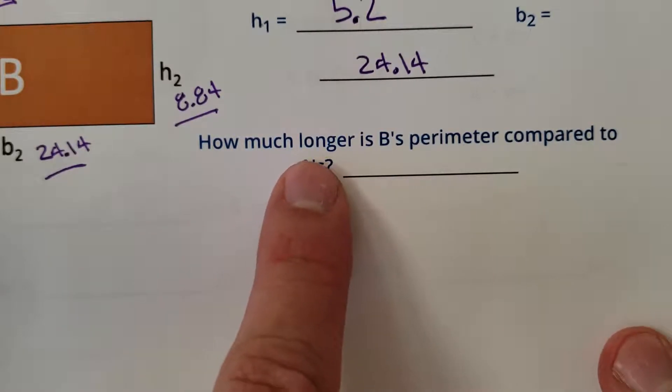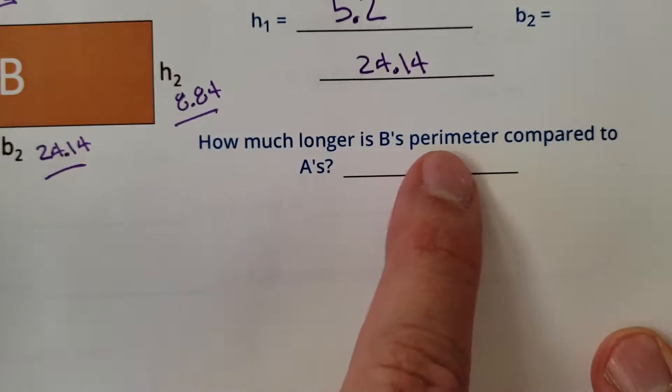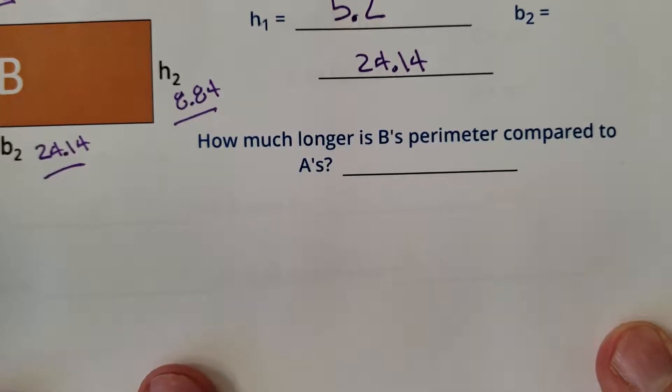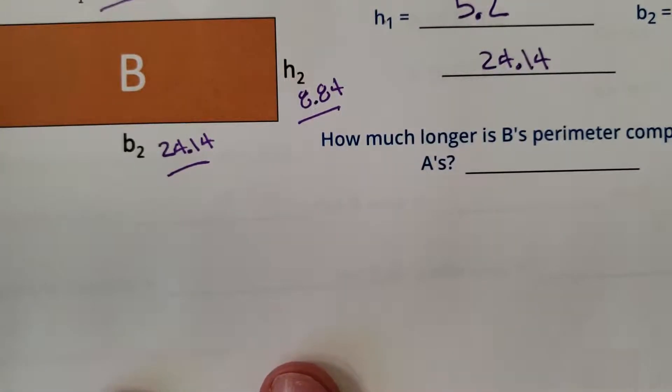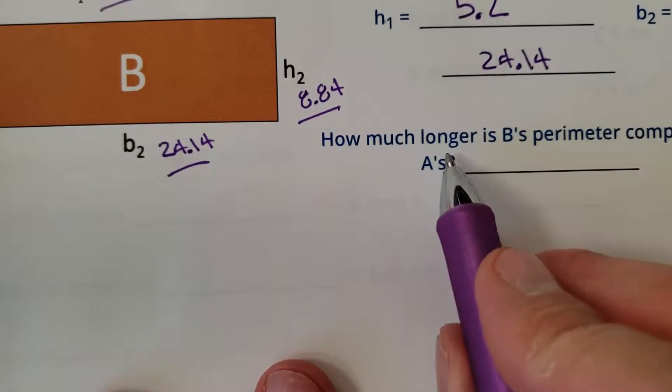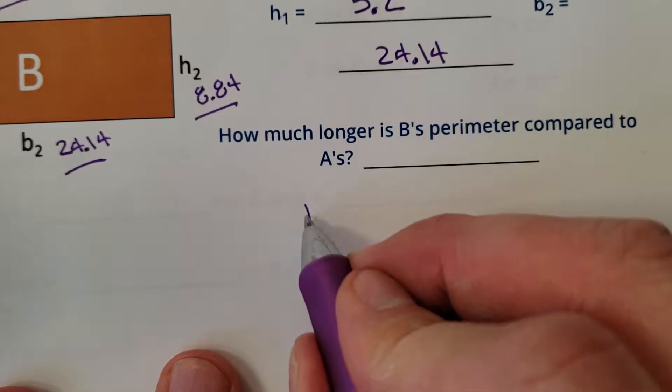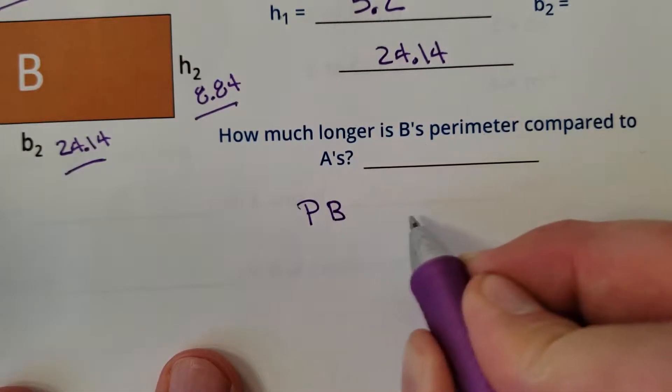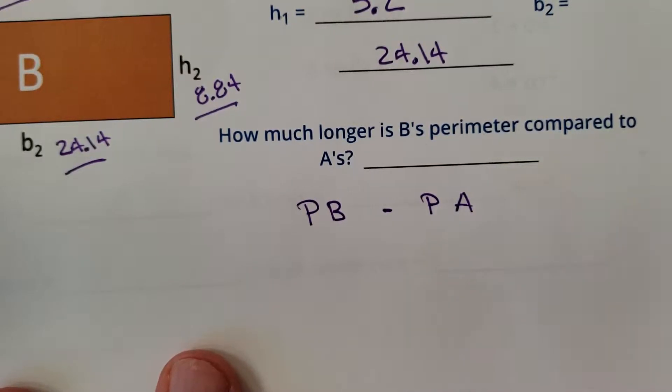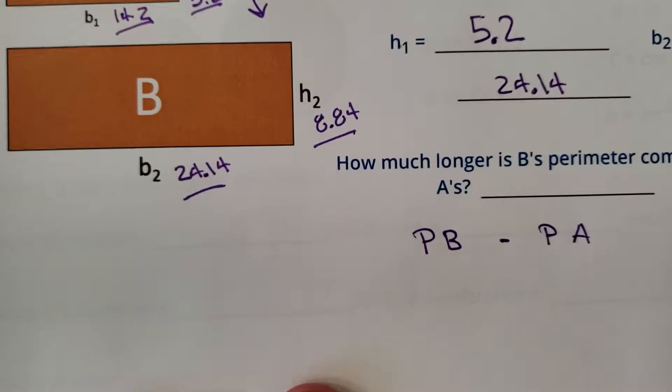Oh, look at this. How much longer is B's perimeter compared to A's? Oh, man. We got to find perimeter? So how much longer? It sounds like subtraction. So we got to find the perimeter of B and we got to subtract the perimeter of A. So let's go ahead and find the perimeters here really quick.